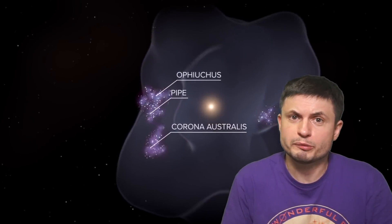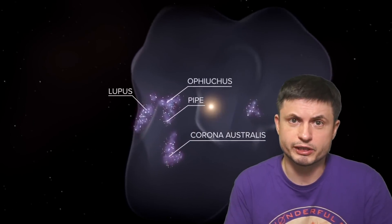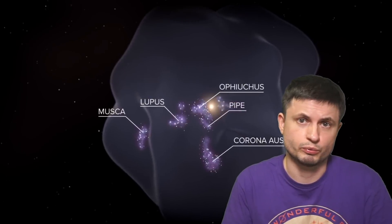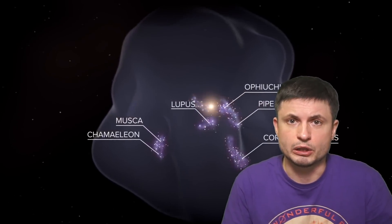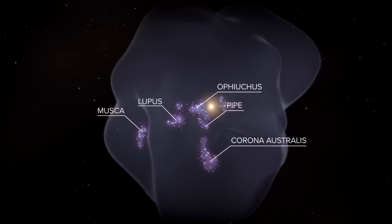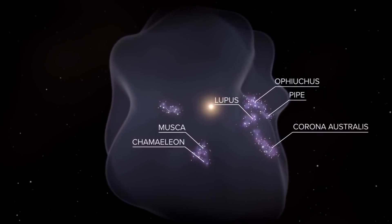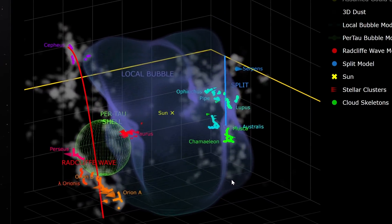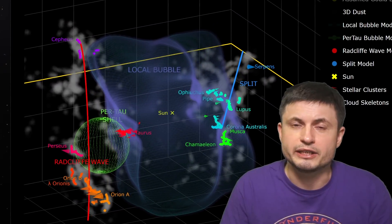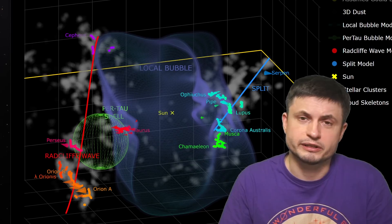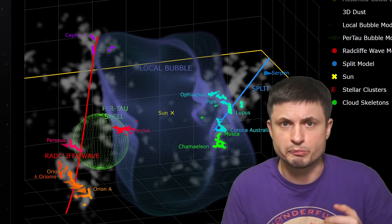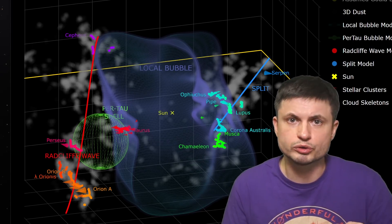Hello wonderful person, this is Anton, and today we're going to be discussing this relatively recent discovery about this somewhat exciting region that we're sort of in the middle of, known as the Local Bubble. Something really exciting has been recently discovered about this region, helping scientists understand and map a lot of the nearby star formation regions, and also helping us understand how most galaxies, including the Milky Way, most likely evolve and create new stars, and really helping us understand a little bit more about our own neighborhood and our place in it.